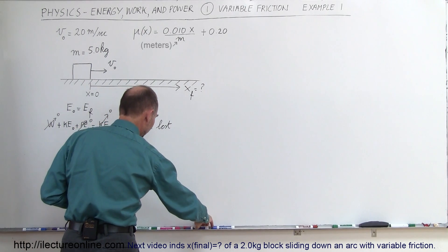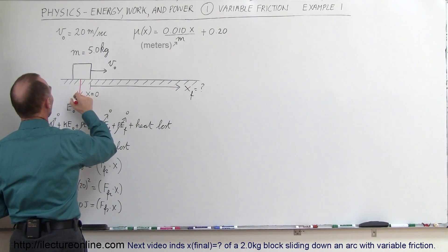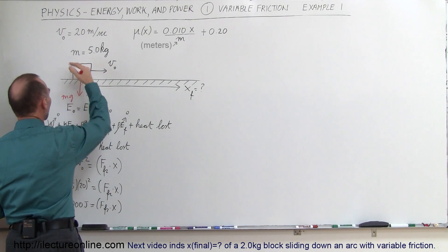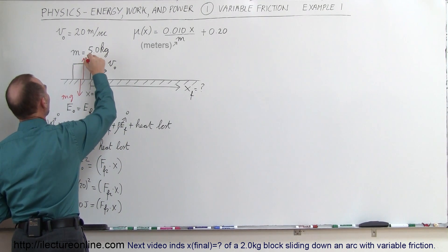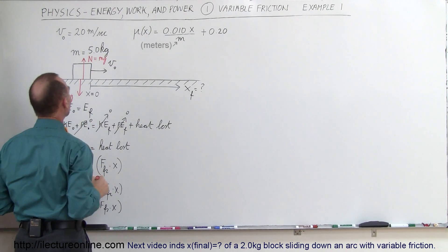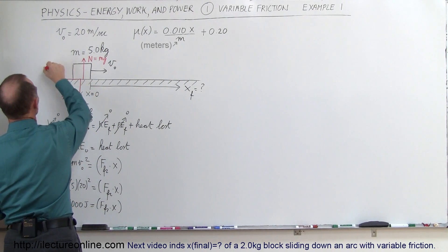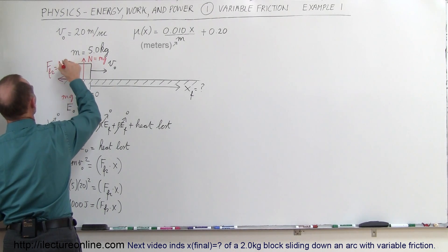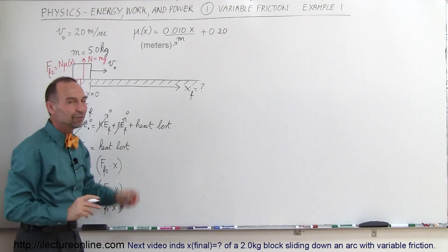Let's draw a force diagram. We have the weight, which is mg pulling the box towards the floor, then we have the normal force pushing back — so the normal force equals the weight of the object. Then we have the friction force pointing to the left. The friction force is equal to the normal force times mu, but remember, mu is going to be a function of position.